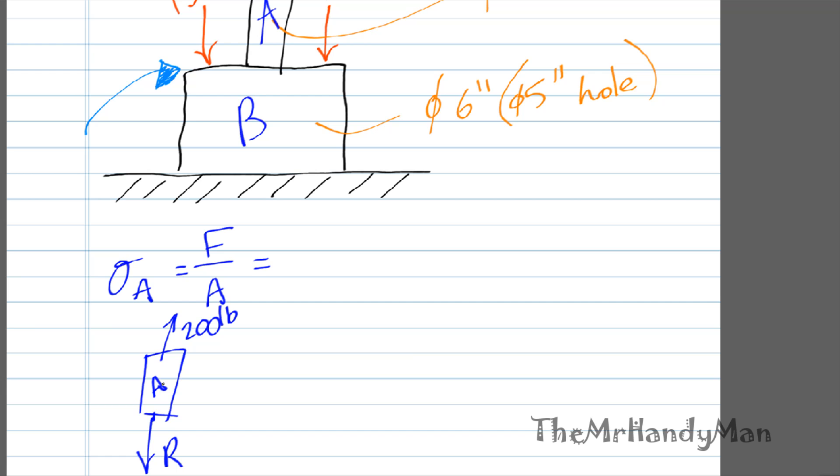So that gives us our force as 200 pounds over the area, which pi r squared, pi 0.75 inches squared, which if I calculate that out for you, that will equal 113.18 psi. Perfect. So 113 psi, we know that's tension.